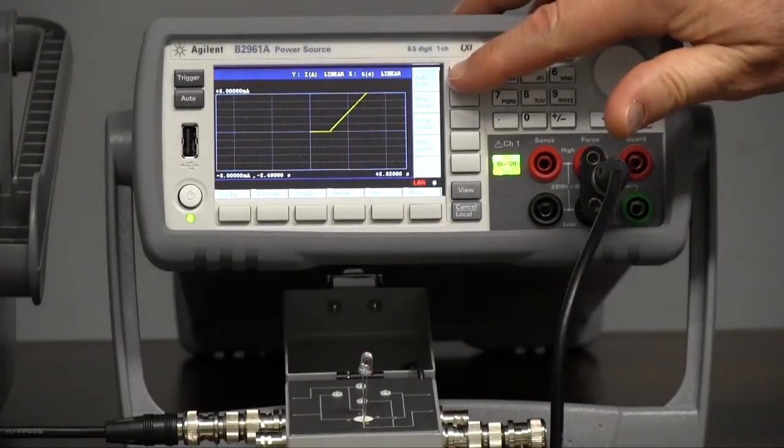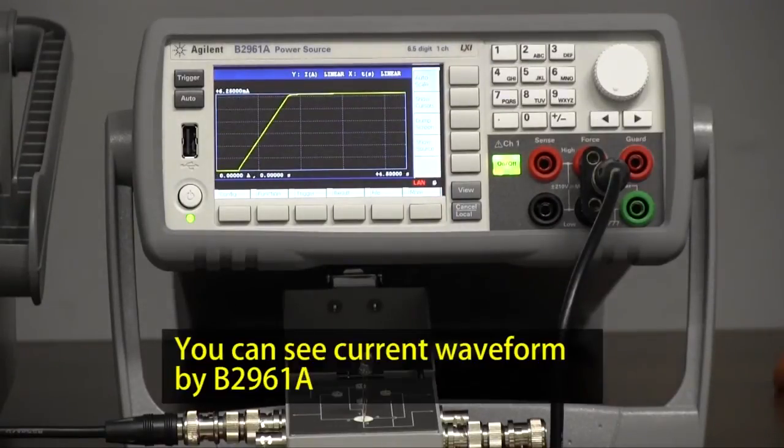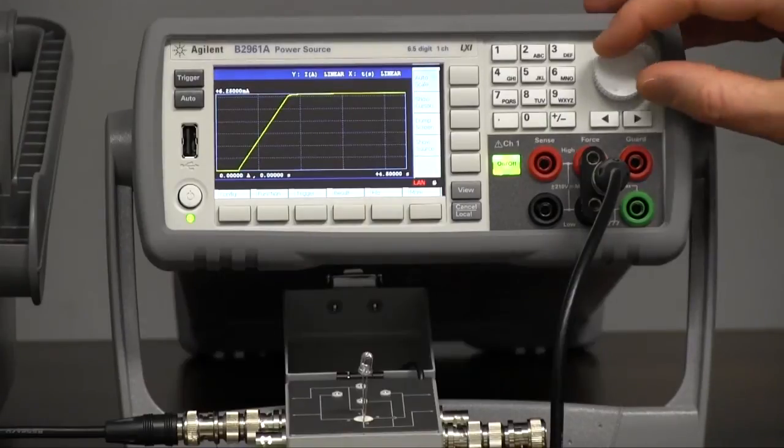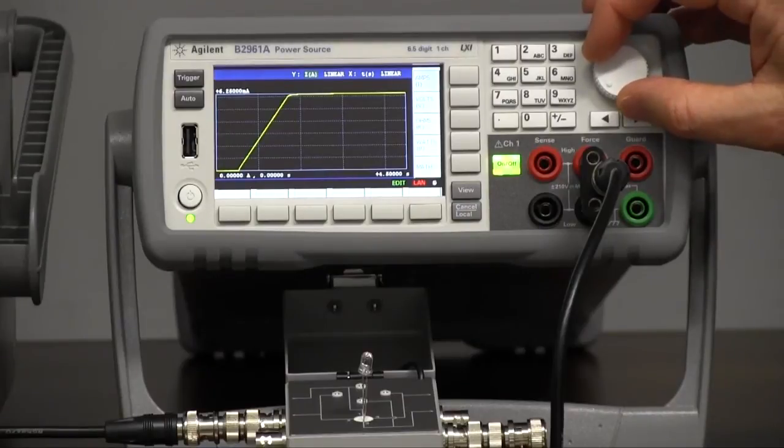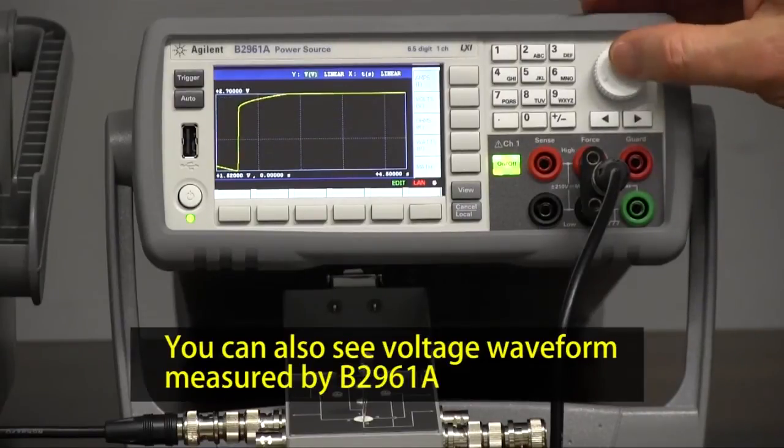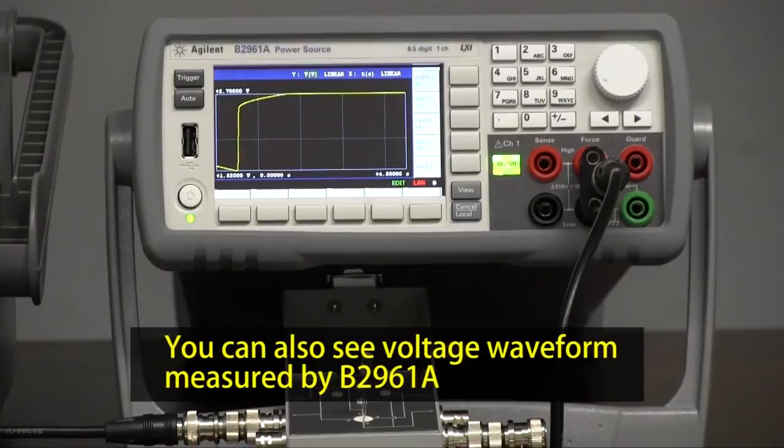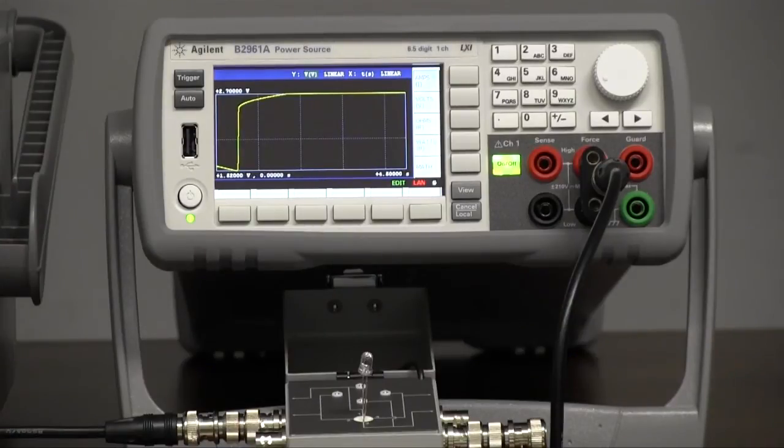So notice that I can also go ahead and push auto scale if I'd like. And I can look at the waveform here. Again, this is the current waveform. I can also actually go in here and change from current to voltage and I can also see the voltage waveform. Notice that in this case we're limited to 2.7 volts because that's what we set the limit at earlier when we were setting up the measurement.